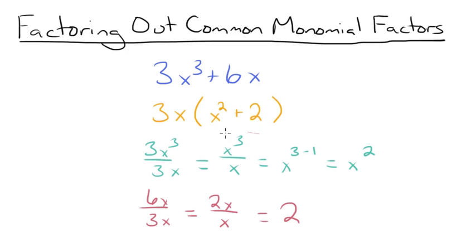If we were to simplify this by distributing the 3x into the set of parentheses, then we would get our original binomial. So let's try another one.